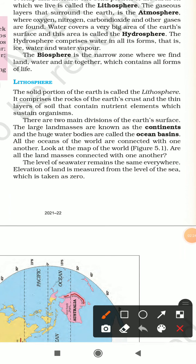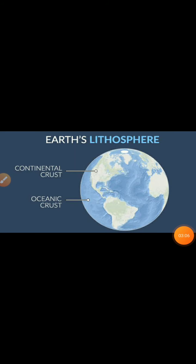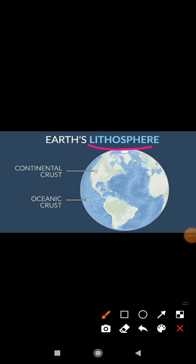Let us now look at the first domain of the Earth: the lithosphere. The solid portion of the Earth is called the lithosphere. It comprises the rocks of the Earth's crust and the thin layers of soil which contain nutrient elements that sustain organisms. There are two main divisions of the Earth's surface: the large land masses known as continents, and the huge water bodies called ocean basins. The lithosphere consists of both continental crust and oceanic crust.